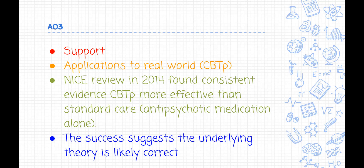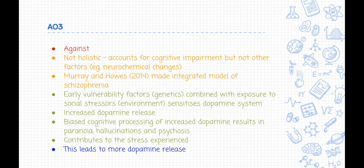The success of this treatment suggests that the underlying theory is likely to be correct and useful. However, the cognitive explanation cannot explain everything. A problem with any psychological model of schizophrenia is that it deals well with one aspect of the disorder — in this case cognitive impairment — but fails to explain other aspects such as neurochemical changes.